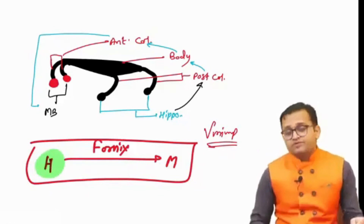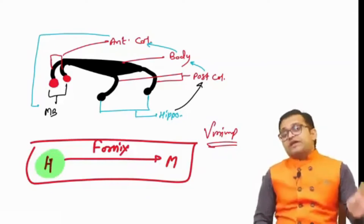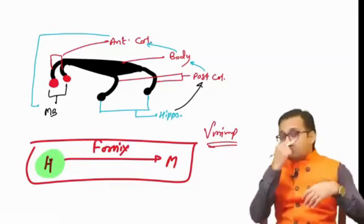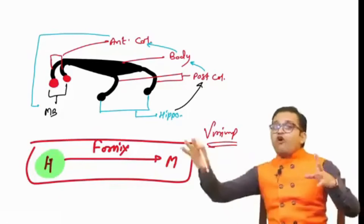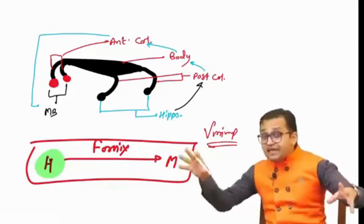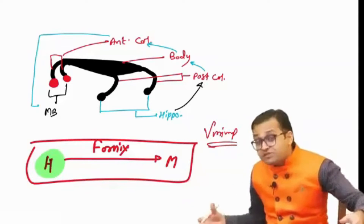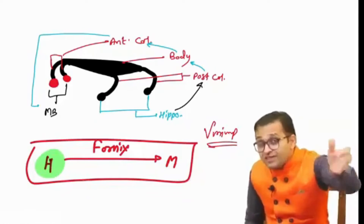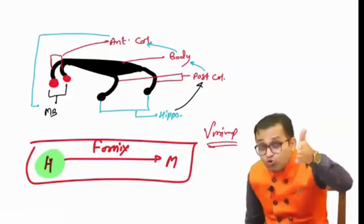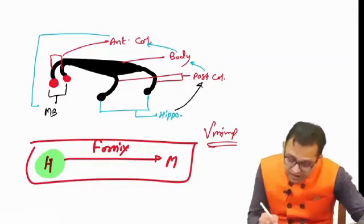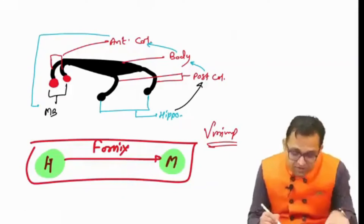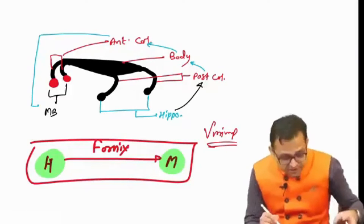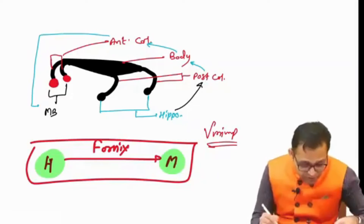The answer is hippocampus when asked about the 'from' side. But the next year, they changed the question: fornix is carrying the impulse 'to' — and now the answer becomes mammillary body.